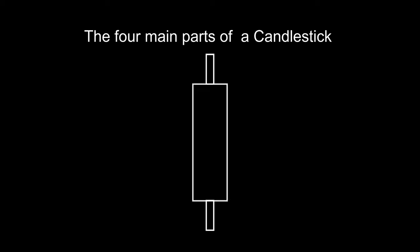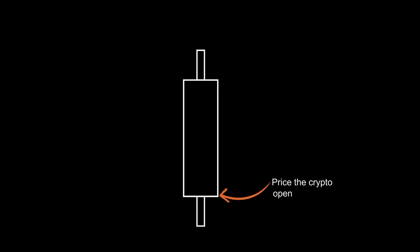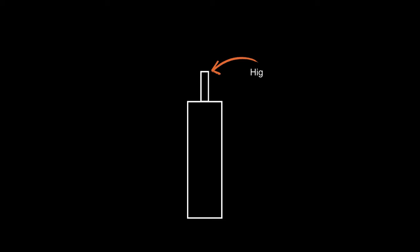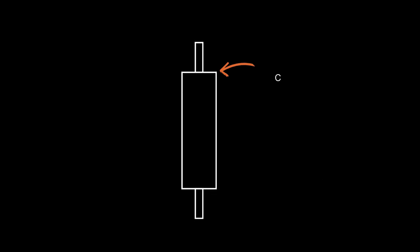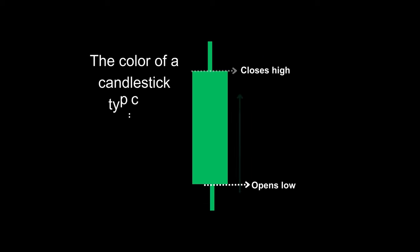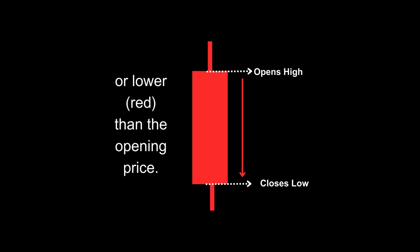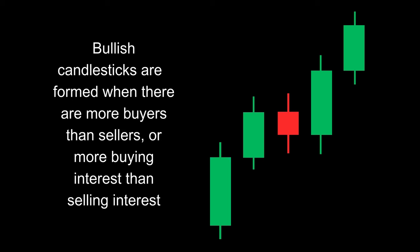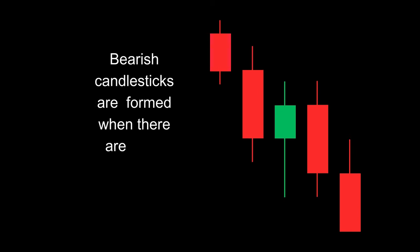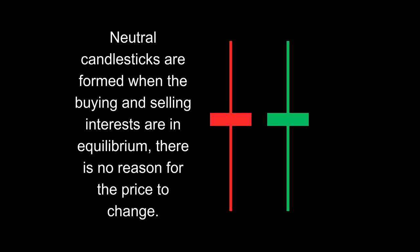The four main parts of a candlestick are the open, the high, the low, and the close. The open is the price at which the crypto opened trading during the period. The high is the highest price the crypto traded during that period. The low is the lowest price the crypto traded, and the close is the price at which the crypto closed during the trading period. The color of a candlestick indicates whether the closing price was higher (green) or lower (red) than the opening price. Bullish candlesticks form when there are more buyers than sellers, bearish candlesticks form when there are more sellers than buyers, and neutral candlesticks form when buying and selling interest are in equilibrium.